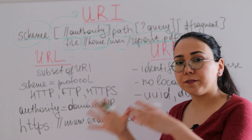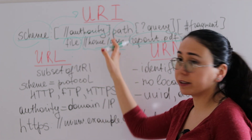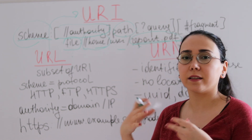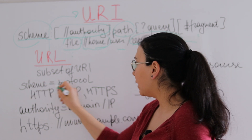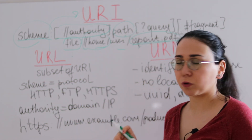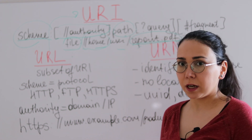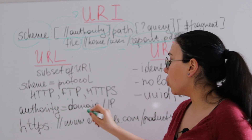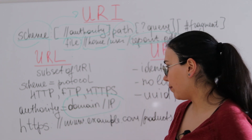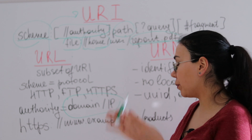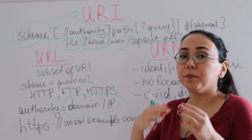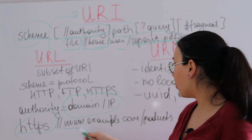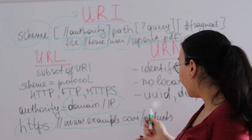Why is URL a specific subset? URL has specific conditions to be classified as a URL. The scheme must equal a protocol — there are many protocols, but the simplest examples are HTTP, FTP, or HTTPS. The authority must be a domain or IP address. Looking at an example website, you can see that any URL meets these conditions: HTTPS as the scheme (a protocol), a domain name like www.example.com, and then a path.